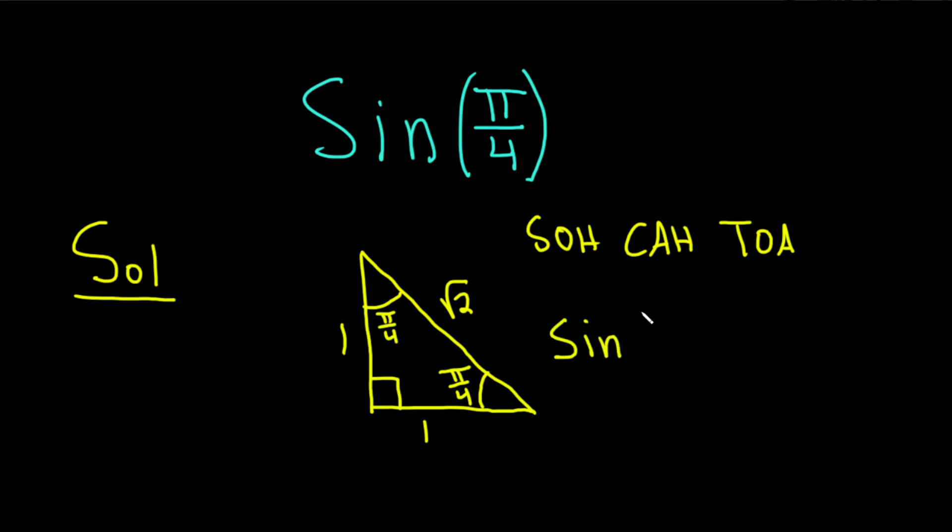For us, it's the sine of π/4, which is opposite over hypotenuse. If you're looking at π/4, it's the opposite side, which is 1, over the hypotenuse, which is √2. And that would be the answer.